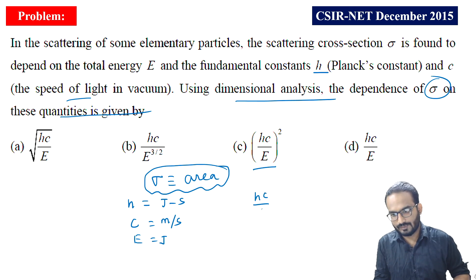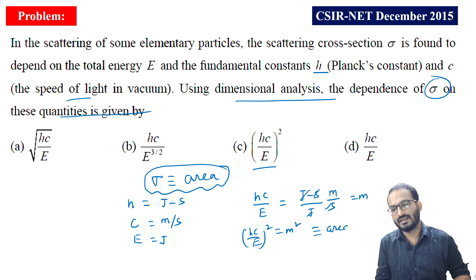If you take hc upon E, let's see what value it gives you. Joule-second and c is meter per second, divided by E which is joule. Joule cancels, so we are getting meter. We need meter square. So if you somehow take the square of it, then that should give you meter square, which is the dimension of area. (hc/E) whole square should be the dimension of sigma. In this way, using dimensional analysis, we can easily find out the dimension of any quantities.